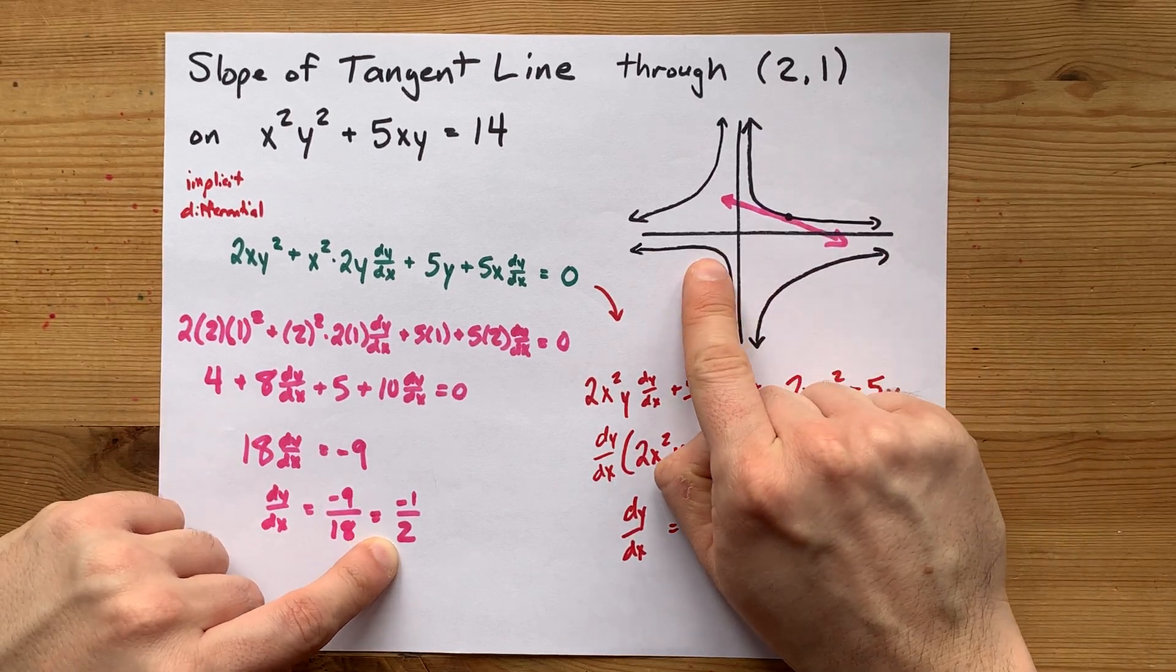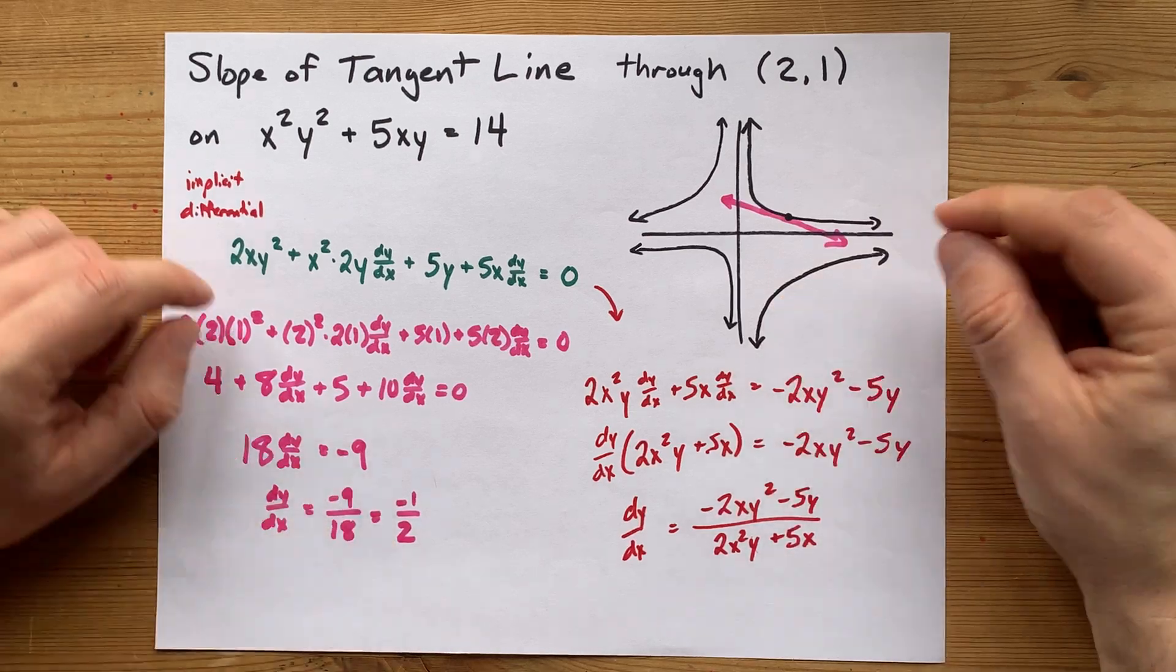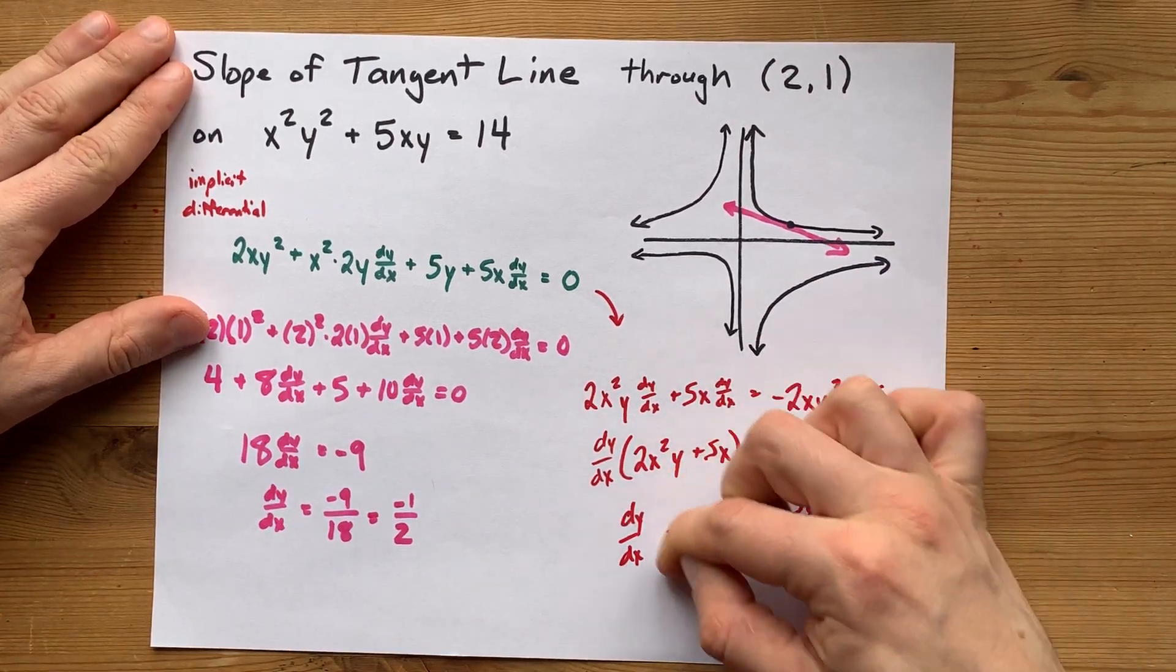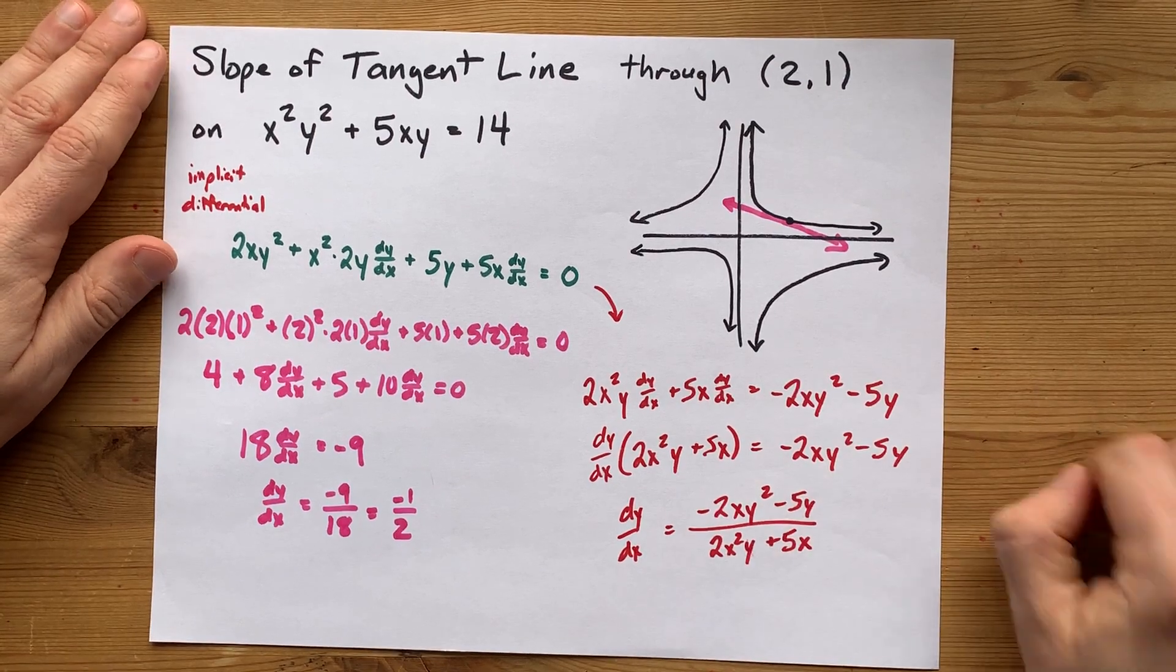But maybe you wanted the slope of the tangent here as well. And here as well. And here as well. And if you have to do it repeatedly, maybe you just want a single formula you can plug x's and y's into. That's the one right there.